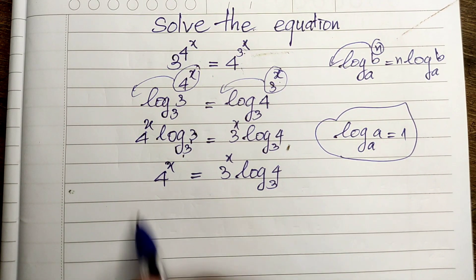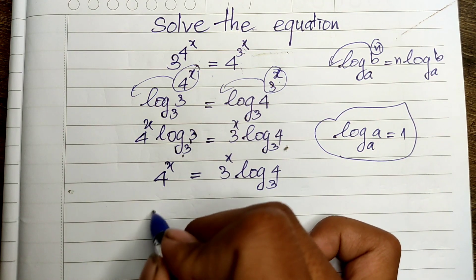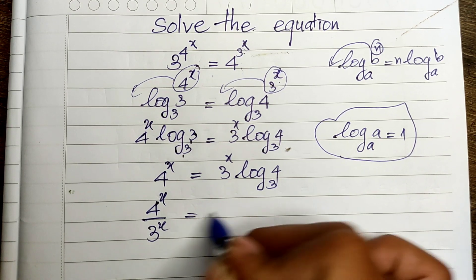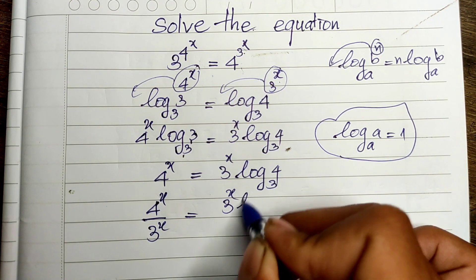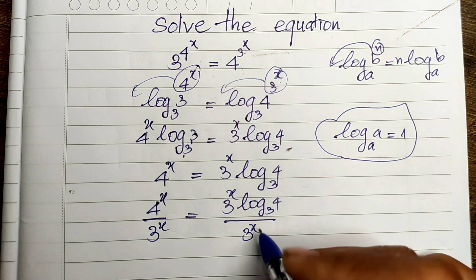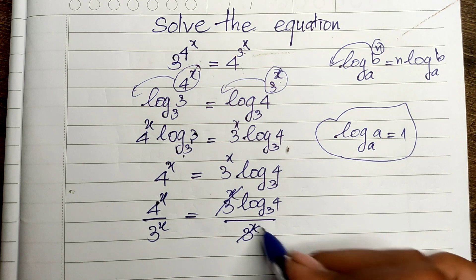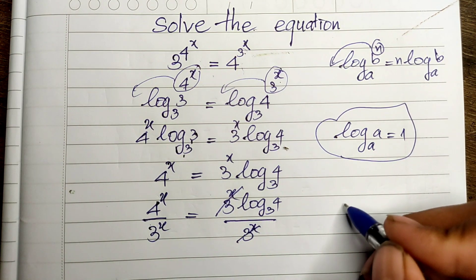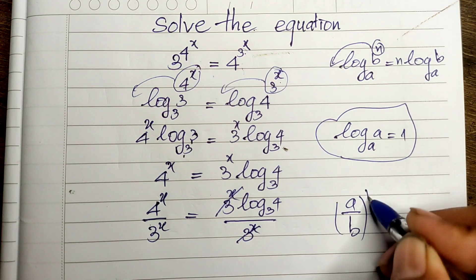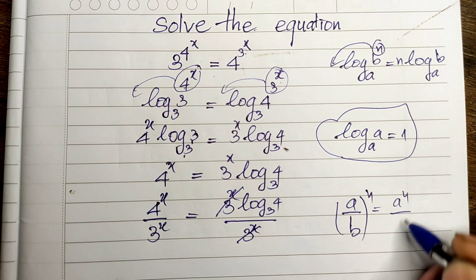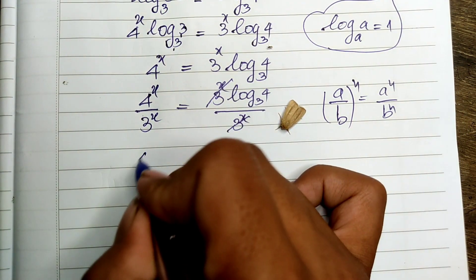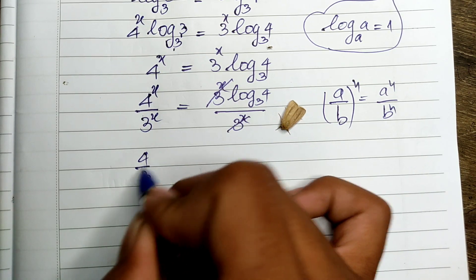Now I divide both sides of this equation by 3^8. So we get 4^8 divided by 3^8 equals log base 3 of 4. We use the rule that (a divided by b) to the power n equals a^n divided by b^n, so we get (4/3)^8 equals log base 3 of 4 to the power 8, giving us (4 divided by 3) to the power 8 equals log base 3 of 4.